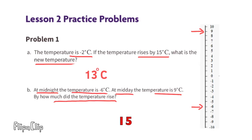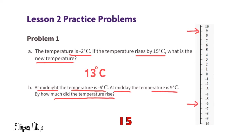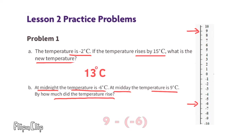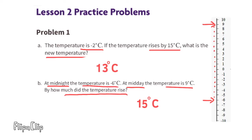So the temperature increased 15 degrees. We can also look at it as 9 minus negative 6. 'Negative' also means the opposite of, so this is 9 and the opposite of negative 6. Since the opposite of a negative is a positive, we can look at this as 9 plus 6, and 9 plus 6 is 15. The temperature changed 15 degrees Celsius.